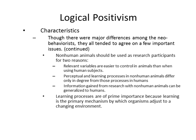Neo-behaviorists also agreed that non-human animals should be used as research participants for two reasons: relevant variables are easier to control in animals than in human subjects, and perceptual and learning processes in non-human animals differ only in degree from those in humans, so we can still learn a lot from animals. Third, information gained from research with non-human animals can be generalized to humans. Learning processes are of prime importance because learning is the primary mechanism by which organisms adjust to the changing environment.